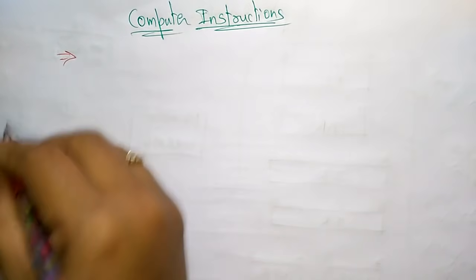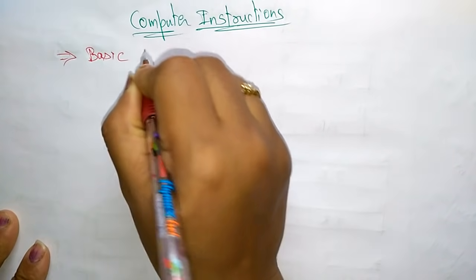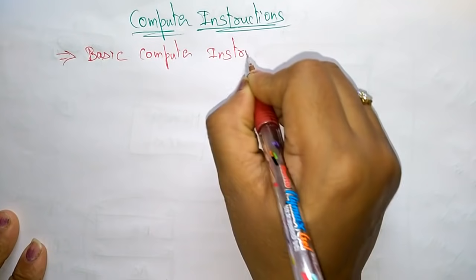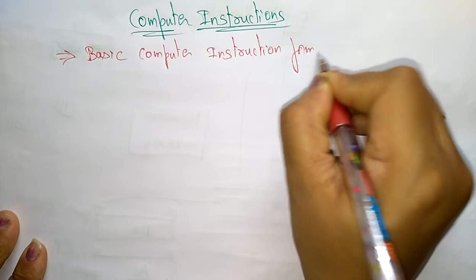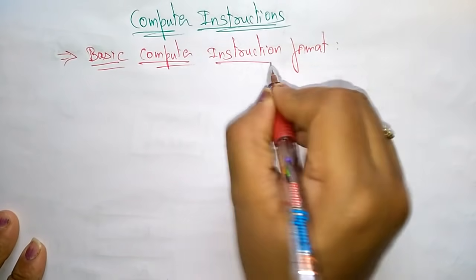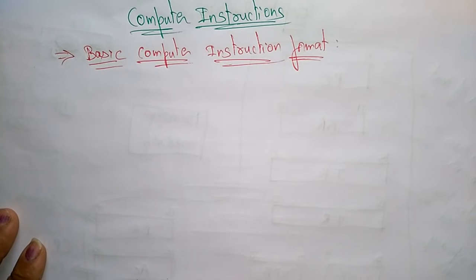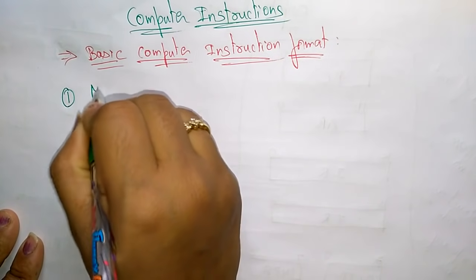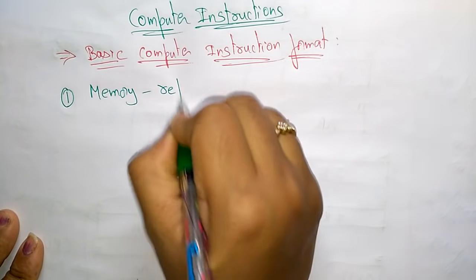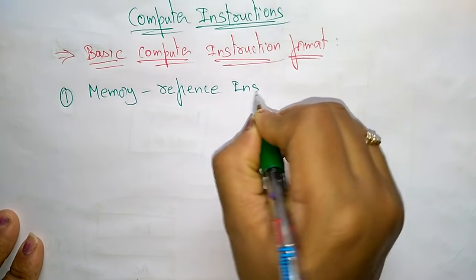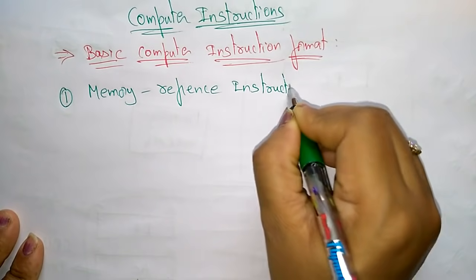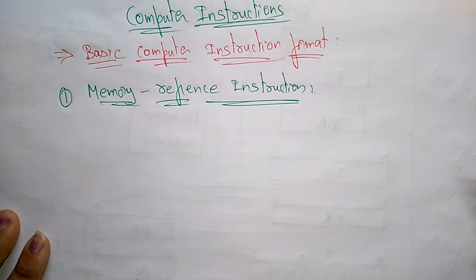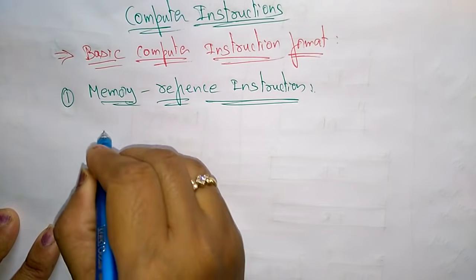The basic computer instruction format has three types — there are three different formats used in the computer. The first format is the memory reference instruction.